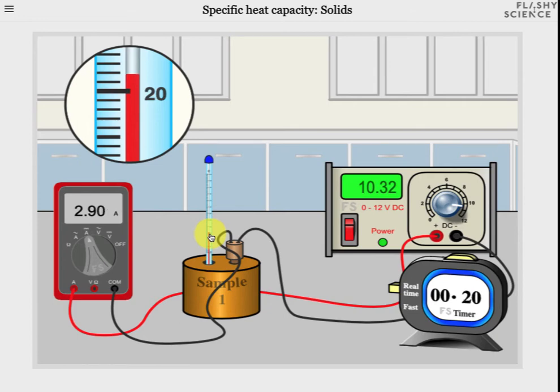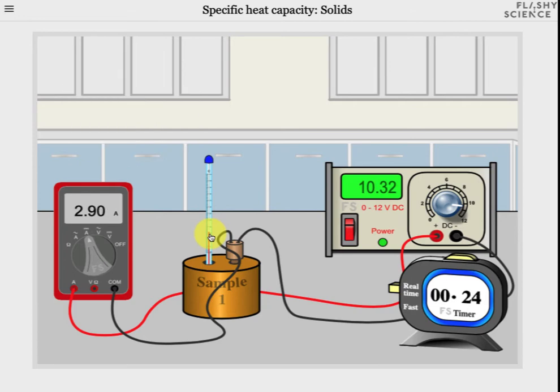If the temperature increase is going too slowly for your liking, then we do allow you to cheat with this experiment. On the left hand side of the timer is a switch. Once this is clicked, time passes more quickly, something you can see from the rate at which seconds are counting up on the timer.